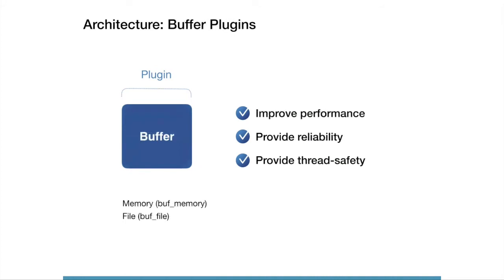The buffer plugin is used inside the output plugin, not standalone. Incoming events are stored in the buffer before being written to destinations. The buffer plugin is the core of robust buffering and retry mechanisms for the output plugin. If you use a file buffer, data is stored on persistent disk — this avoids data loss even when Fluentd crashes. We recommend using the file buffer in production.